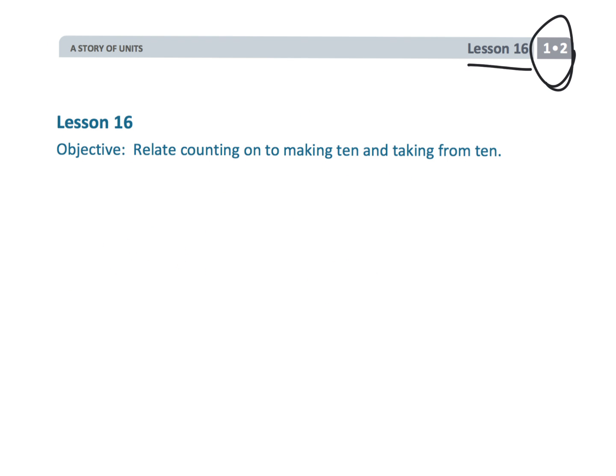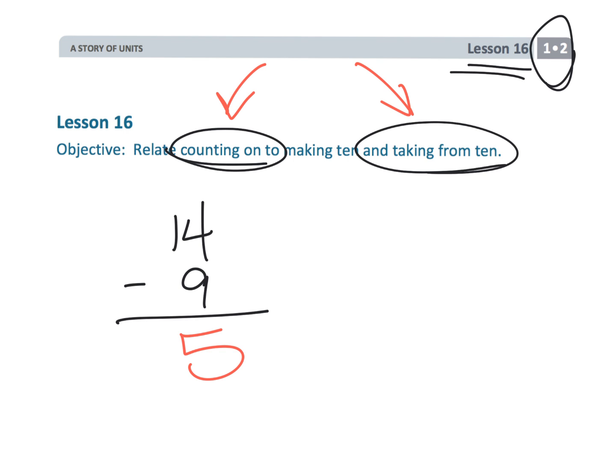That wraps up first grade module 2 lesson 16, where we're going to continue subtracting, but we're now giving students the choice of counting on or the taking from 10 strategy. Ultimately both of these are largely going to be replaced by just memorizing the answers, but we're doing it not through just rote memorization—we're doing it through a variety of strategies.